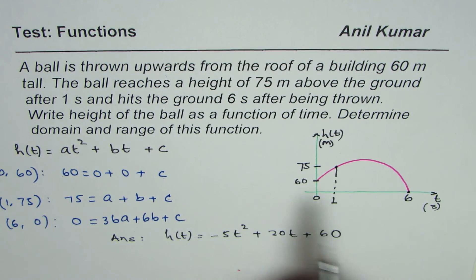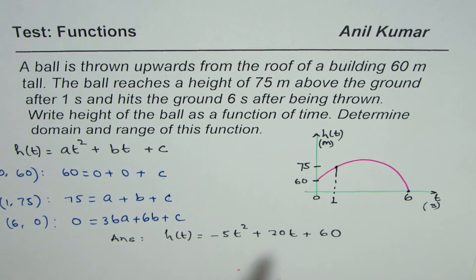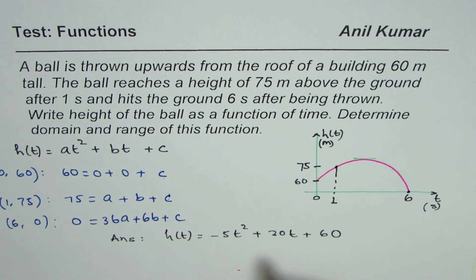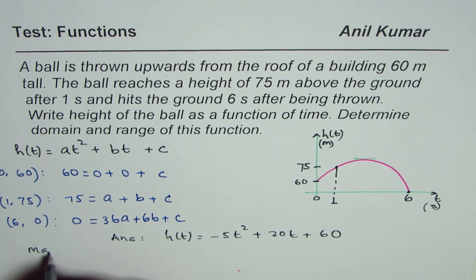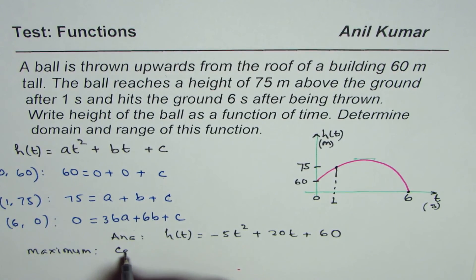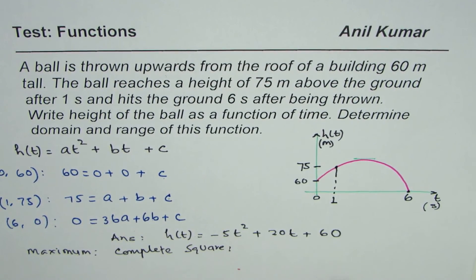Once you get this, you clearly know what domain is. The domain is from 0 to 6. But range is kind of typical. How will you find the range? For that you need to find the maximum. To find maximum you should do completing squares.